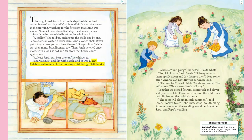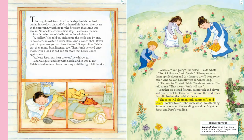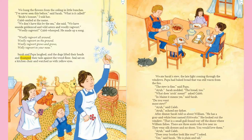"If you put it to your ear, you can hear the sea," she put it to Caleb's ear, then mine. Papa listened too. Then Sarah listened once more with a look so sad and far away that Caleb leaned against me. "At least Sarah can hear the sea," he whispered. Papa was quiet and shy with Sarah, and so was I, but Caleb talked to Sarah from morning until the light left the sky. "Where are you going? To do what?" "To pick flowers," said Sarah. "I'll hang some of them upside down and dry them so they'll keep some color and we can have flowers all winter long."